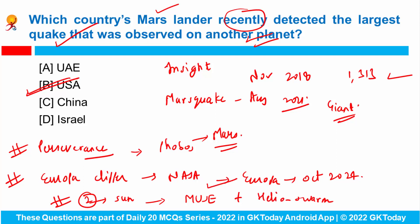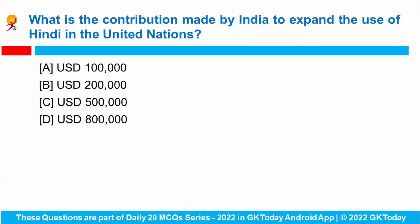What is the full form of MUSE? It stands for Multi-Slit Solar Explorer.